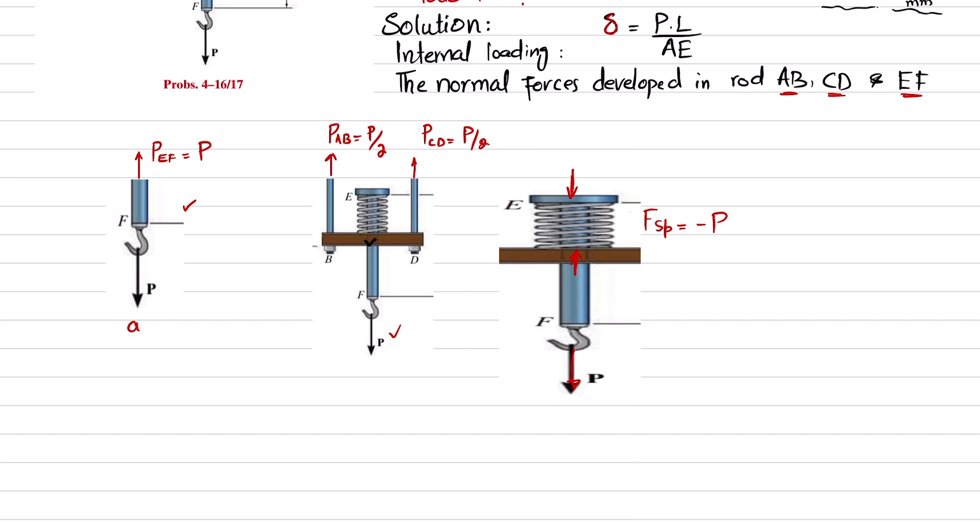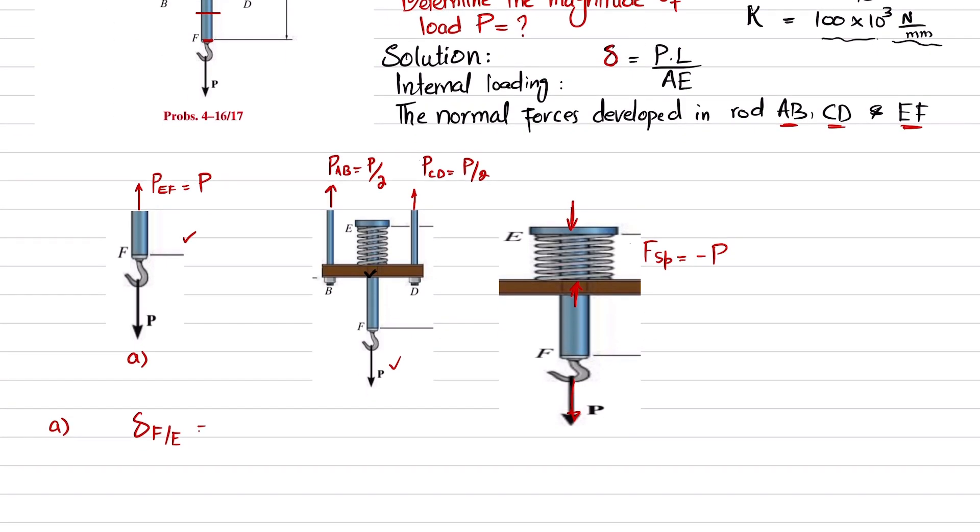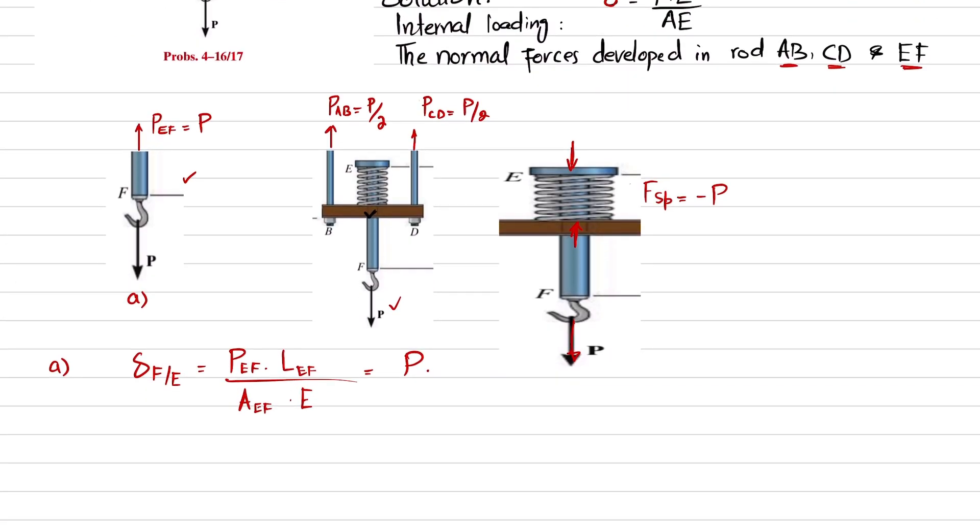First, for rod EF, we will find the change of point F with respect to point E. You have to find the movement of this point F with respect to this point E, which is obtained by the formula P times L divided by A times E. I will write P_EF times L_EF divided by A_EF times E. P_EF is equal to P. Length is 450 millimeters, so in meters it is 0.450.